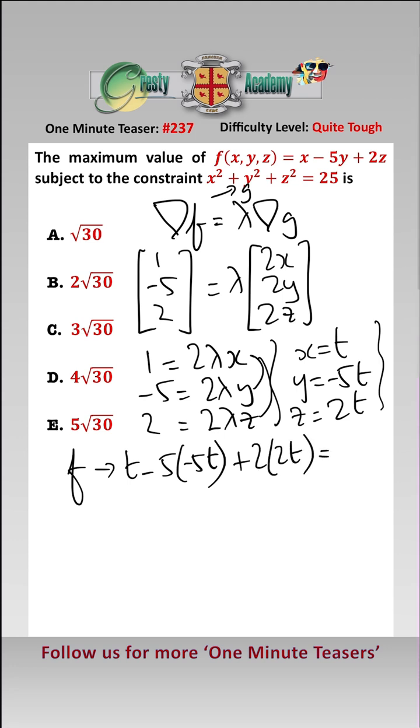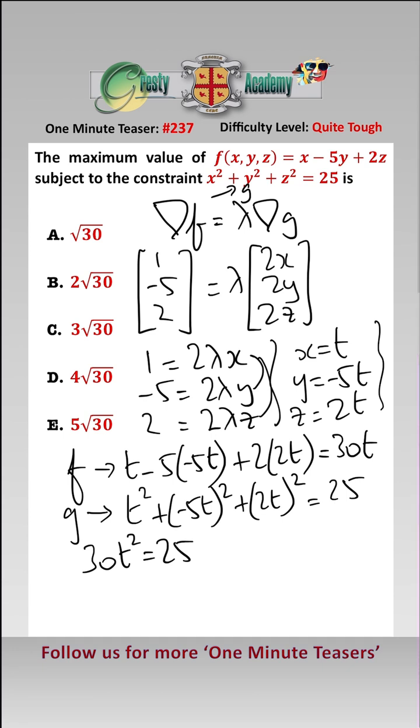And then solving for t, we put into g, which gives us t squared plus minus 5t squared plus 2t squared equals 25. Solving that gives us 30t squared is 25, i.e., t equals 5 over root 30.